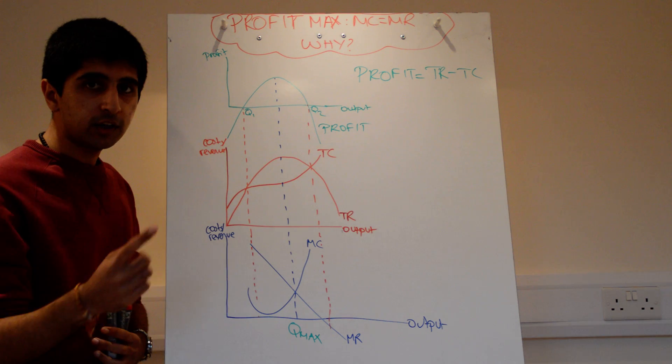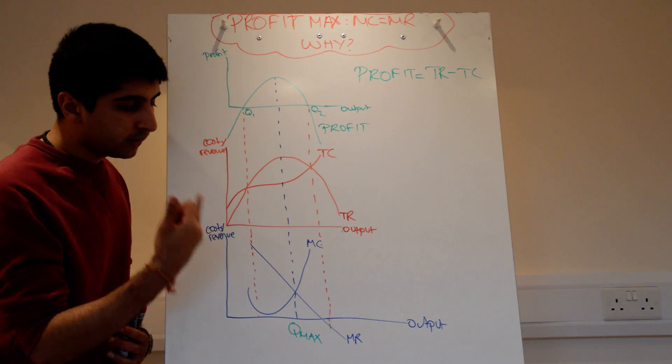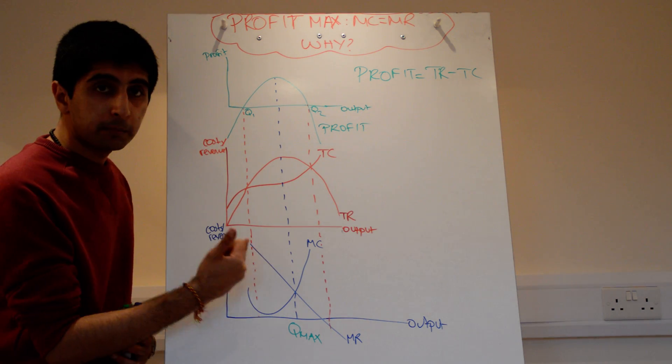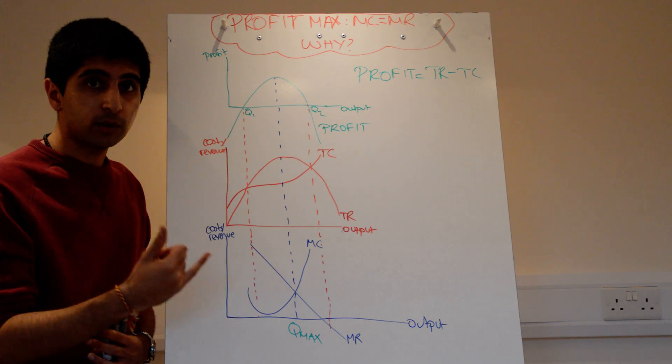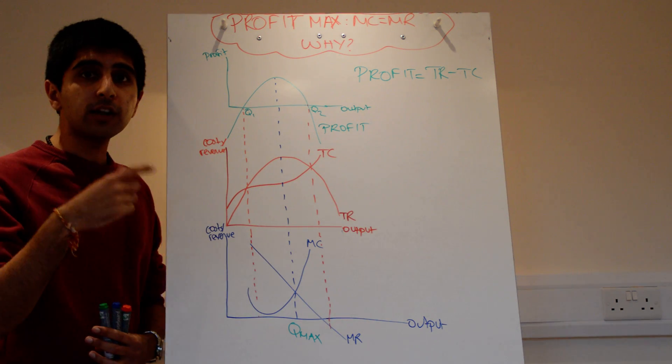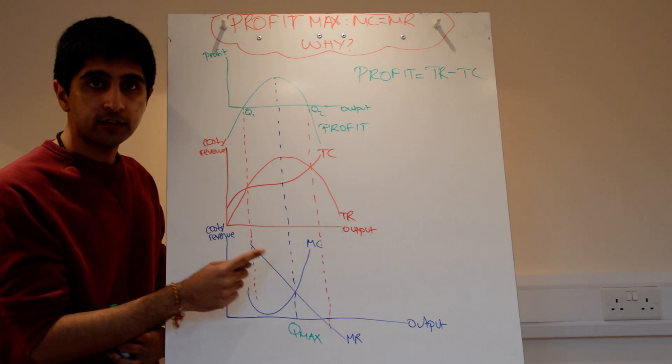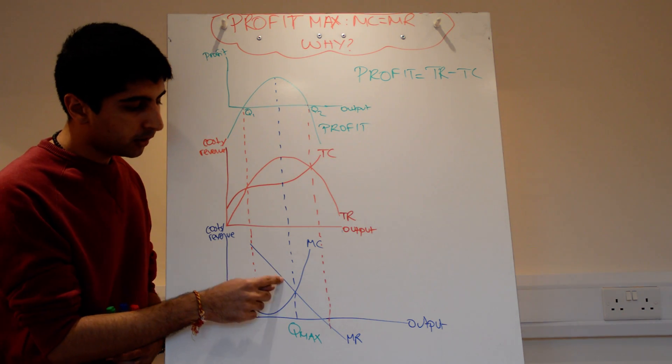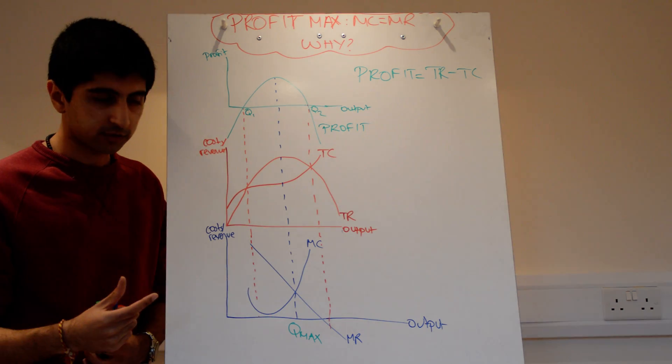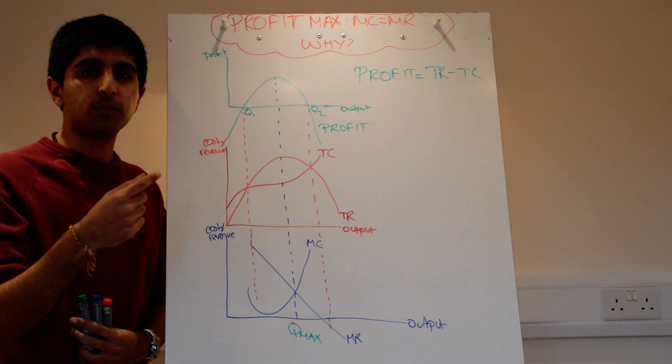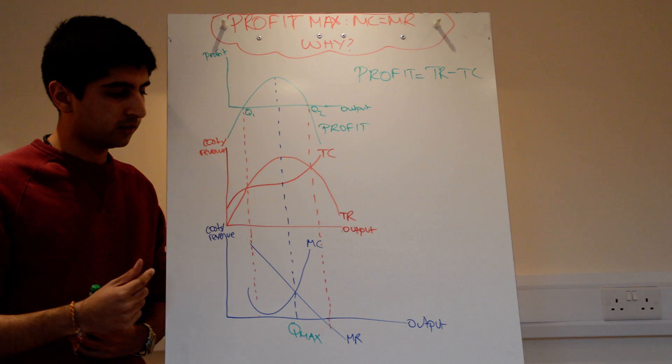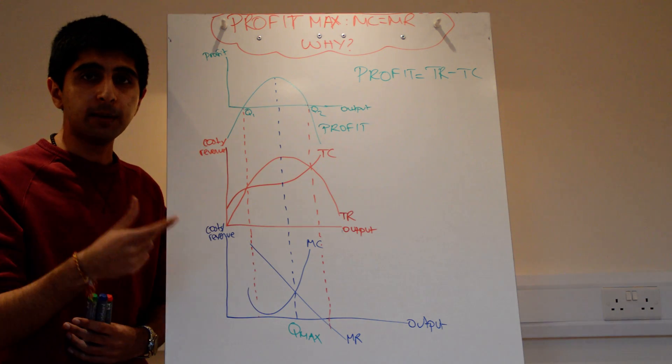So what we could do is by increasing output further, by moving output closer to MC equals MR, we can actually increase the total level of profit in the pot because all these units getting closer to MC equals MR, the marginal revenue is greater than the marginal cost. So each extra unit is bringing in more revenue than cost.